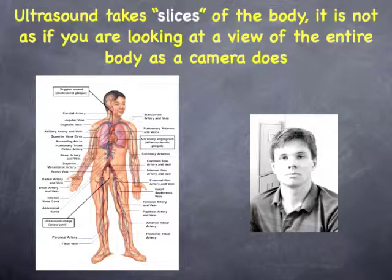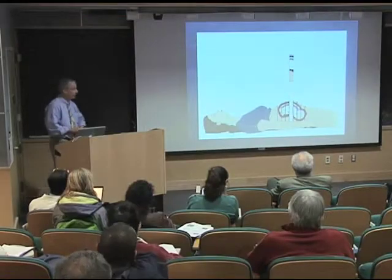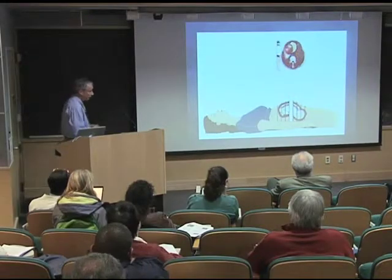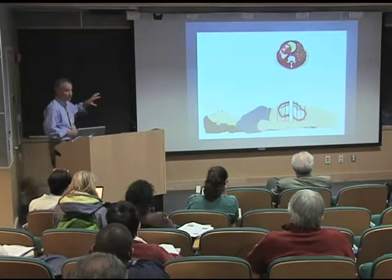When somebody comes in for an ultrasound exam or a CT or an MRI, they're thinking that they're going to be looking at the entire person in toto on the screen. Well, in fact, what we're really looking at is a slice of the person rather than looking at this anatomical drawing or looking at this individual's face. As an example, this is what we're looking at whenever we look at an ultrasound or a CT.